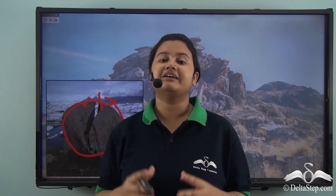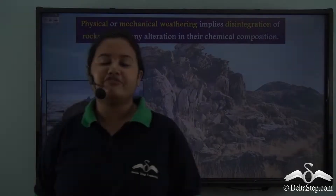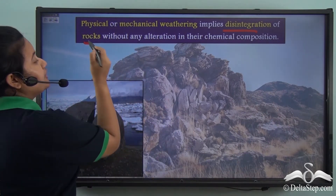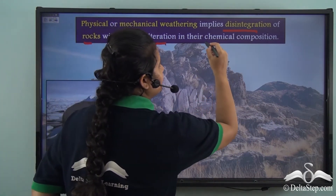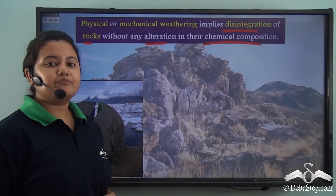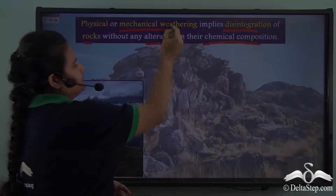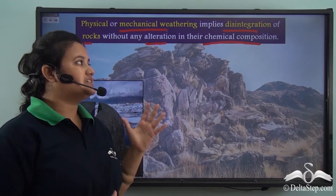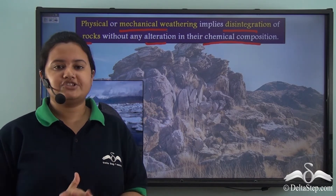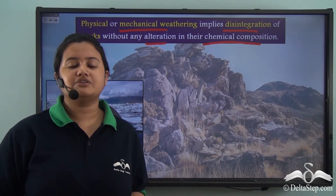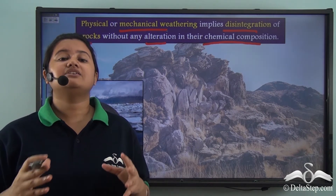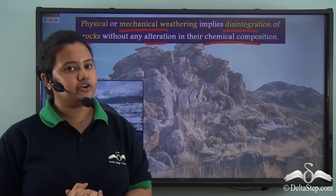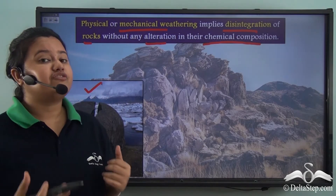Let's understand the meaning of physical weathering. Physical weathering refers to the disintegration of rocks without any alteration in the chemical composition of rocks. Another name for physical weathering is mechanical weathering. Physical weathering is very similar to physical change, where the size, shape, and appearance of the rocks change but there is no alteration in the chemical composition of the rocks.